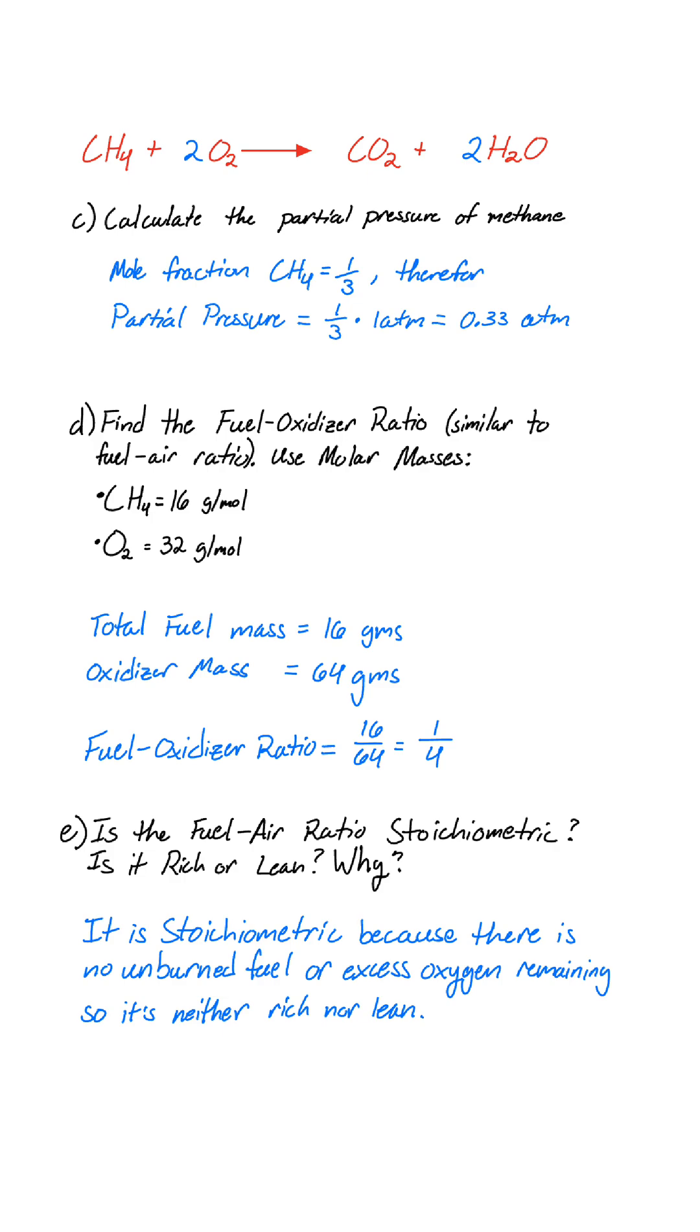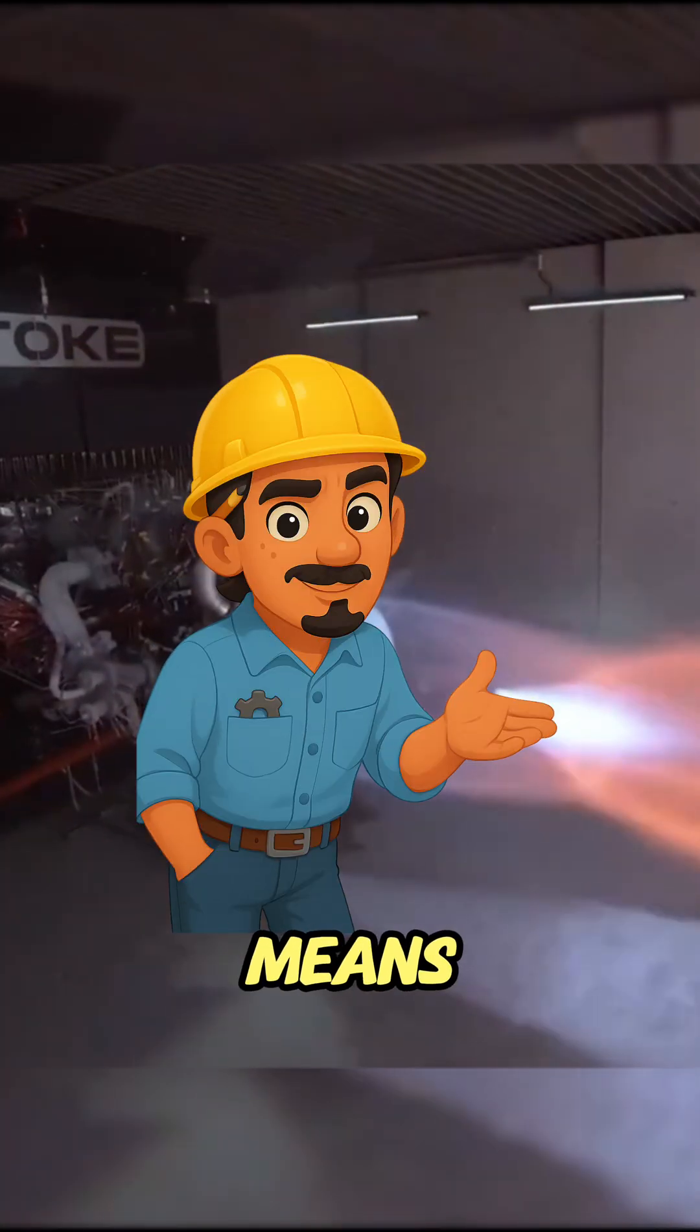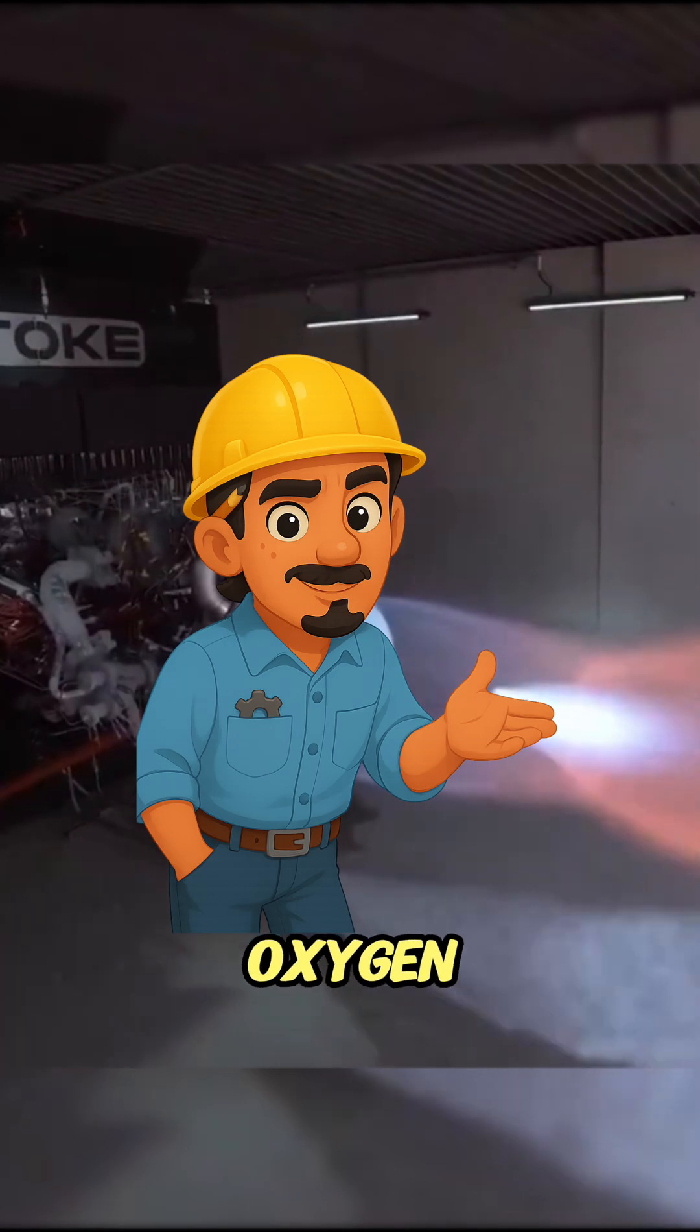At the balanced or stoichiometric point, there's no leftover fuel and no leftover oxygen. That's what we have here. So this mix is neither rich nor lean. Quick note: rich means more fuel than stoichiometric. Lean means more oxygen.